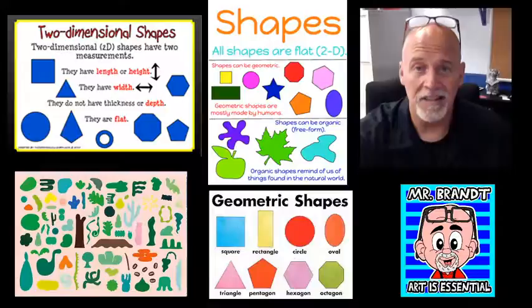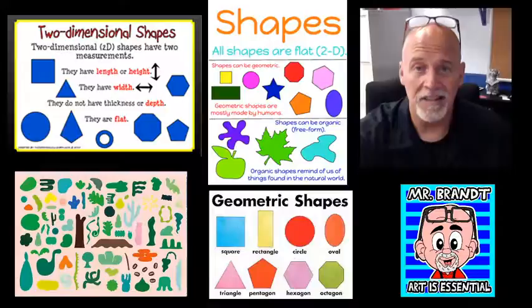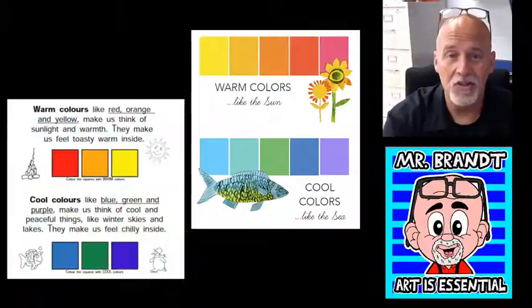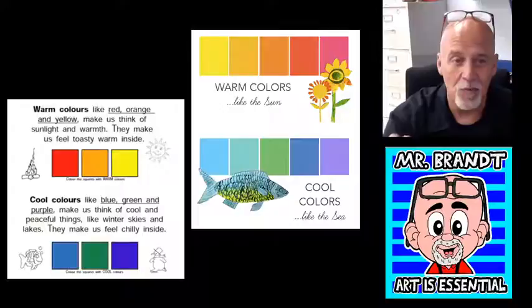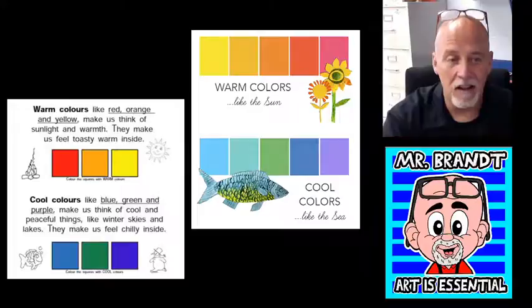You're going to use some of those shapes in your project today. For color, we're going to use warm and cool colors. The warm colors are yellows, oranges, and reds — the colors that make us think of warmth and sunlight. They make us feel toasty and warm, and I get kind of happy when I see those.